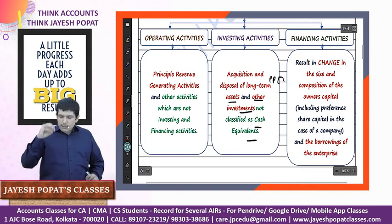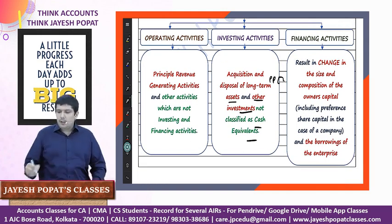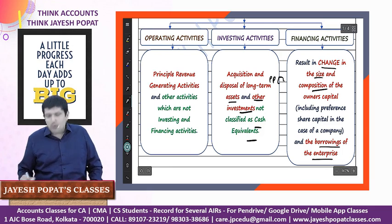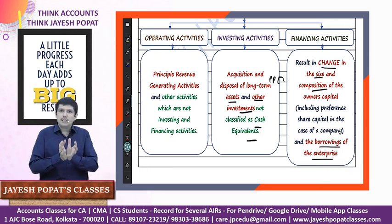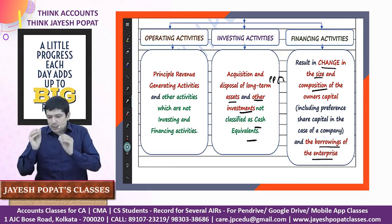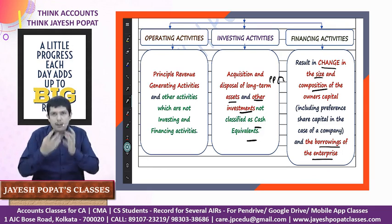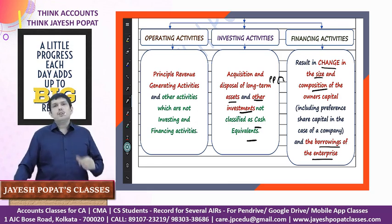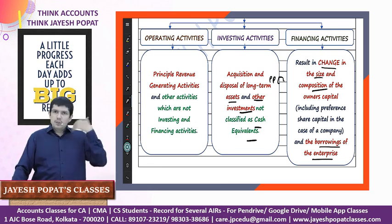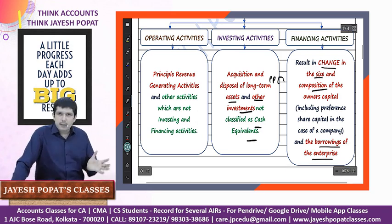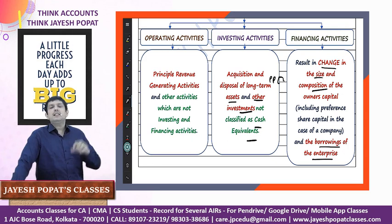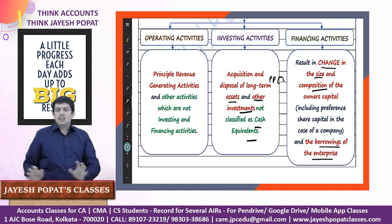Financing activity deals with how the enterprise has financed itself. It brings about a change in the size and composition of owner's capital - including preference shares in case of a company - and borrowings of the enterprise. Size refers to the amount and composition refers to the mix of equity, preference, and borrowings. Items such as loans taken, equity shares issued, preference shares issued, debentures issued, redemption of preference shares, redemption of debentures, buyback of equity shares, change in overdraft facilities, interest paid, dividend paid, and dividend distribution tax paid fall into this category.